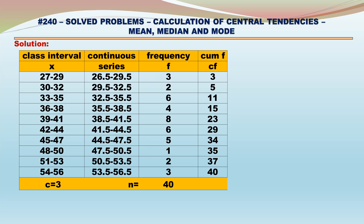Let us calculate cumulative frequencies. For 26.5–29.5: 3. For 29.5–32.5: 3 + 2 = 5. For 32.5–35.5: 5 + 6 = 11. For 35.5–38.5: 11 + 4 = 15. For 38.5–41.5: 15 + 8 = 23. For 41.5–44.5: 23 + 6 = 29. For 44.5–47.5: 29 + 5 = 34. For 47.5–50.5: 34 + 1 = 35. For 50.5–53.5: 35 + 2 = 37. For 53.5–56.5: 37 + 3 = 40. Total frequency is 40.